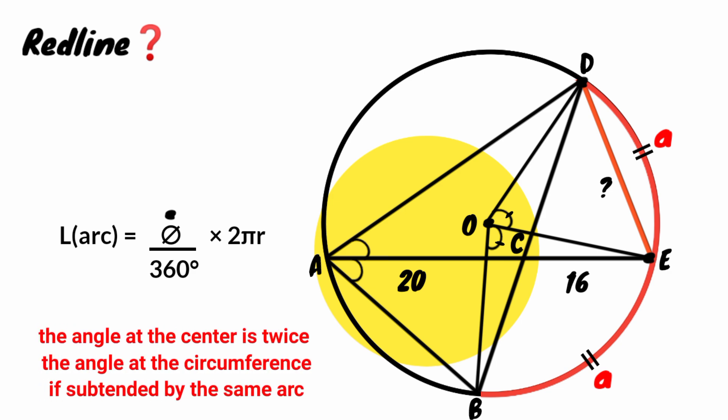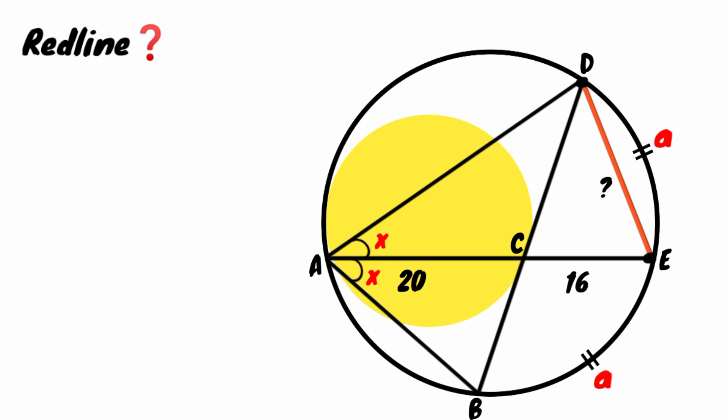So these angles are congruent. If we let this be x, this must also be x. Here, this angle and this are subtended by the same arc BE, that makes them equal. So since this is x, this must also be x.